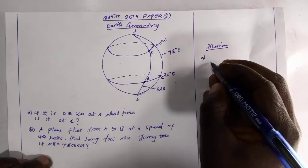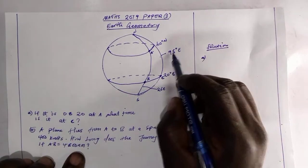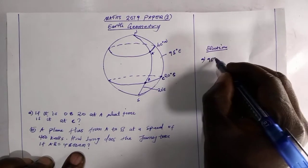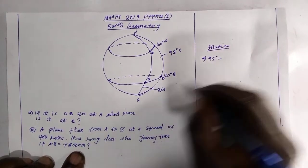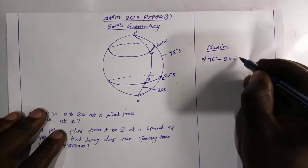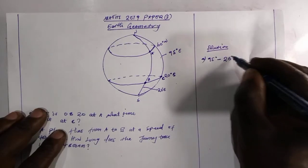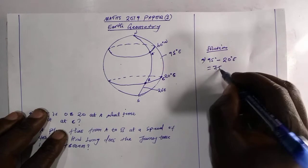For A, we are going to subtract 95 degree minus 20, because it is in the same pole, in which we are going to have 75.